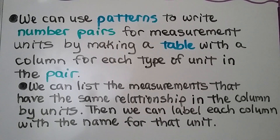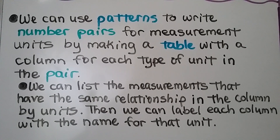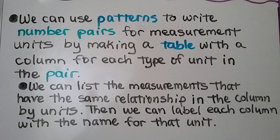We can use patterns to write number pairs for measurement units by making a table with a column for each type of unit in the pair. We can list the measurements that have the same relationship in each column by units, then label each column with the name for that unit.